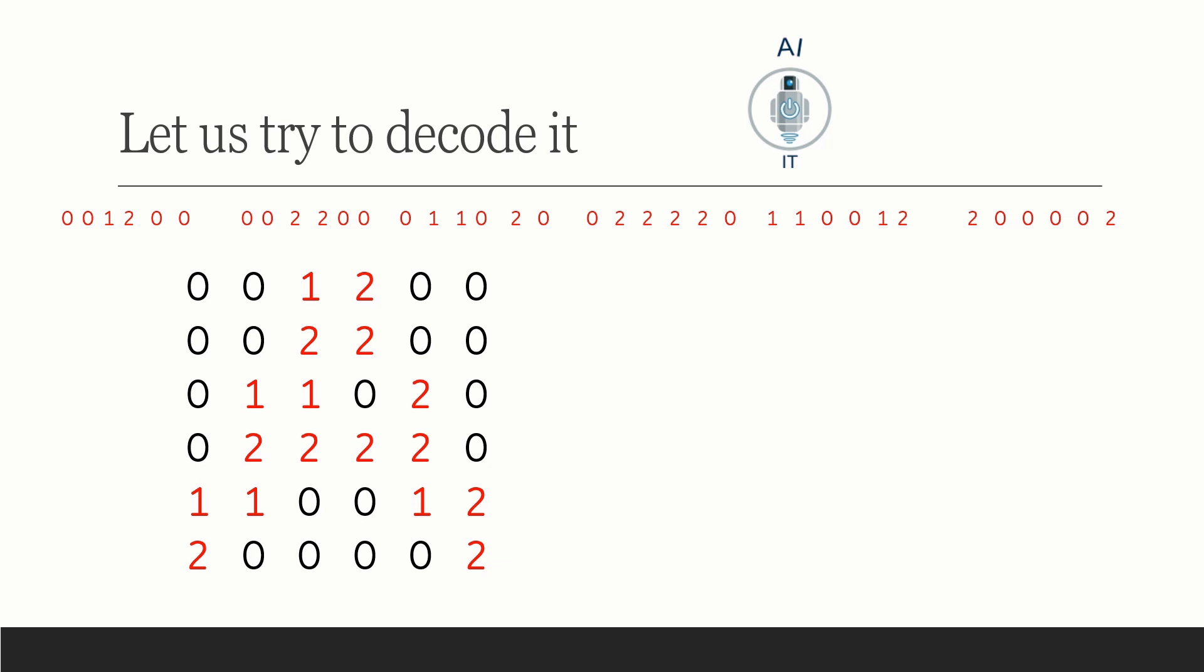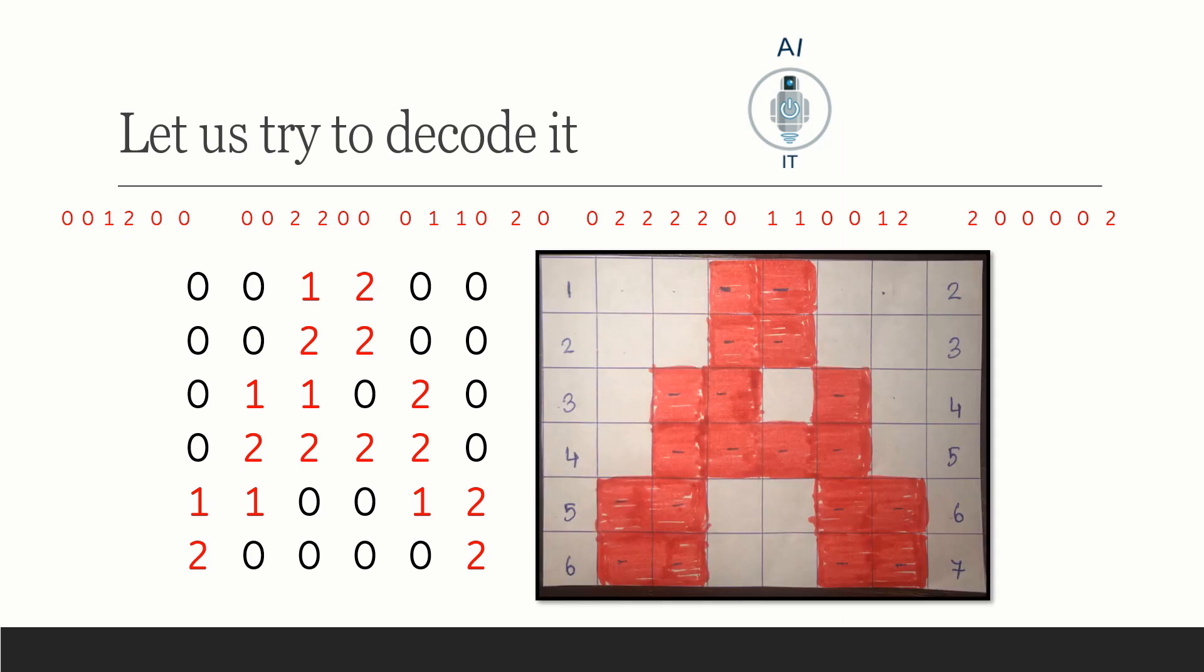Now I am going to take a similar six by six matrix and try to do a color coding to see what happens. We get a pattern like this.